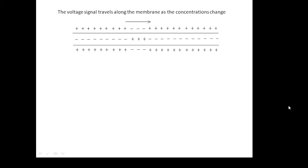This changes as the signal travels down. What happens is that the inside becomes positive and the outside becomes negative, but then this pulse travels down the axon and once it's gone, it returns back to where it was again.